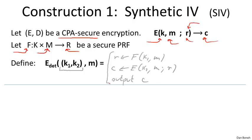If the encryption scheme E is randomized counter mode, then the randomness R would be the random IV, which is output along with the ciphertext, making the ciphertext slightly longer than the plaintext. But the point isn't to generate a short ciphertext — rather, the point is to make the encryption scheme deterministic. If we encrypt the same message multiple times, we always obtain the same randomness R, and as a result, we always obtain the same ciphertext C.